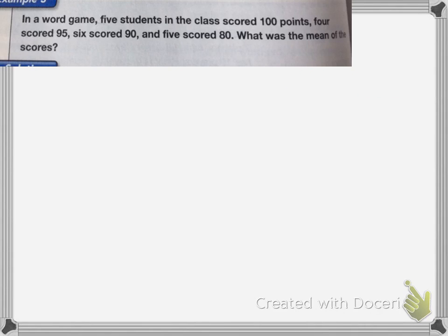In this one, in a word game, five students in the class scored 100 points, four scored 95, six scored 90, and five scored 80. It wants to know, what is the mean of the scores? Mean is the same thing as average, just another word for it.